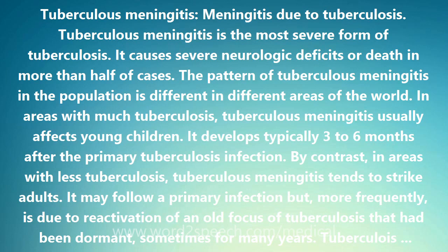The World Health Organization recommends a 2-month intensive course of isoniazid, rifampin, pyrazinamide, and ethambutol, followed by 4 months of isoniazid and rifampin. Elevated intracranial pressure can be life-threatening. The hydrocephalus may require placement of a ventricular peritoneal shunt.